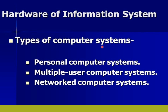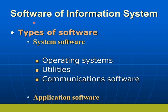Types of computer systems include personal computer systems, multiple users computer systems, and network computer systems. Software of information systems includes system software, operating systems, utilities, communications software, and application software.